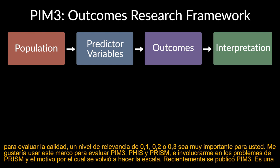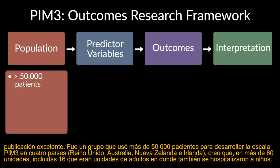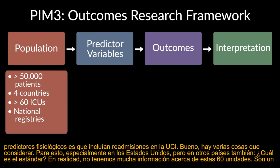PIM-3 was recently published, and it's a really fantastic publication. This was a group that used over 50,000 patients to develop the PIM-3 score in four countries — the United Kingdom, Australia, New Zealand, and Ireland — over approximately 60 units, including 16 that were adult units that hospitalized children. The population used national registries, so data was collected automatically — all comers — with diagnostic codes in the national registries. Importantly, it included readmissions to the ICU.